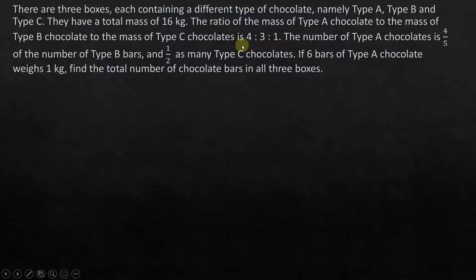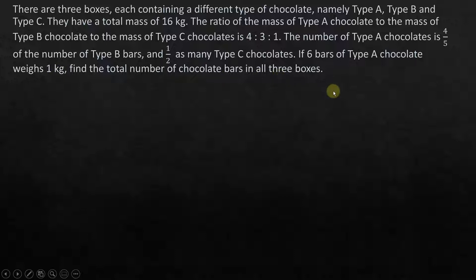So there are three quantities and their mass is in the ratio 4:3:1. Now, the number of type A chocolates — take a clear look — this talks about the number of chocolates, not the mass of the boxes. The number of type A chocolates is four-fifths of the number of type B bars, and half as many type C chocolate bars. If six bars of type A chocolate weighs 1 kg, find the total number of chocolate bars in all three boxes.